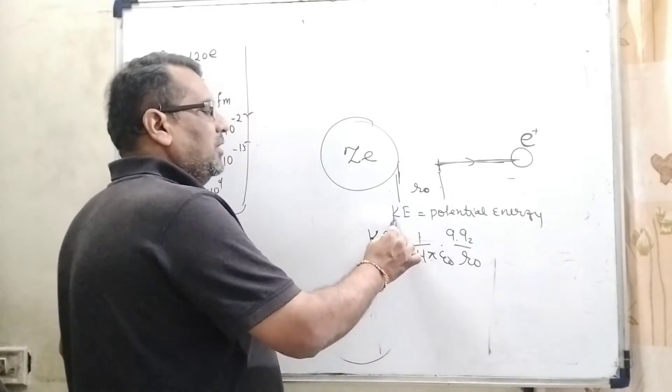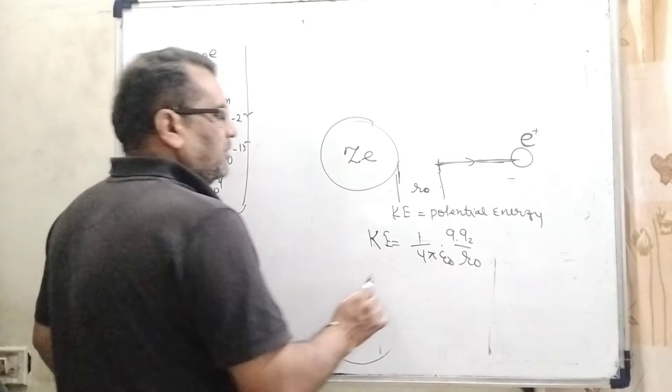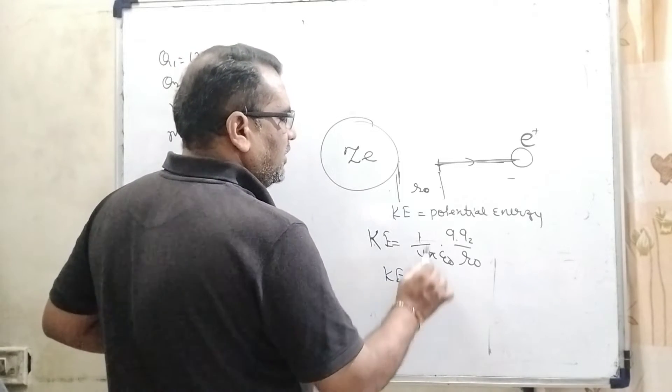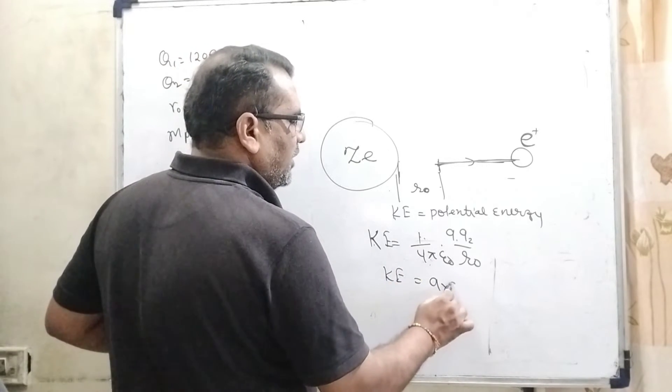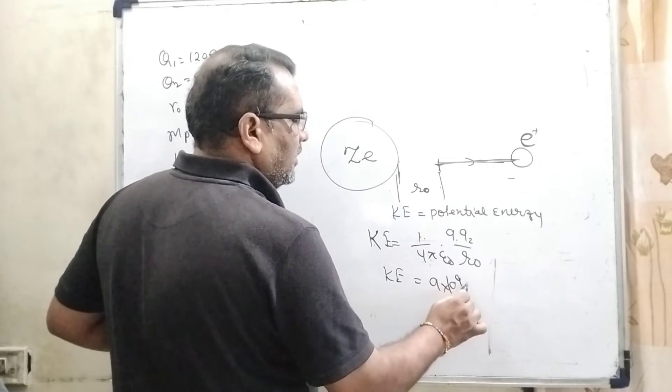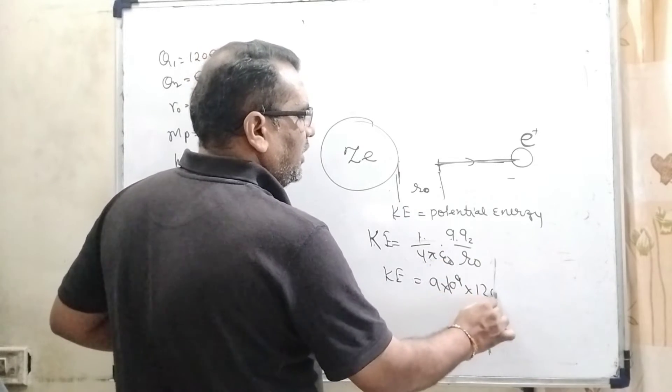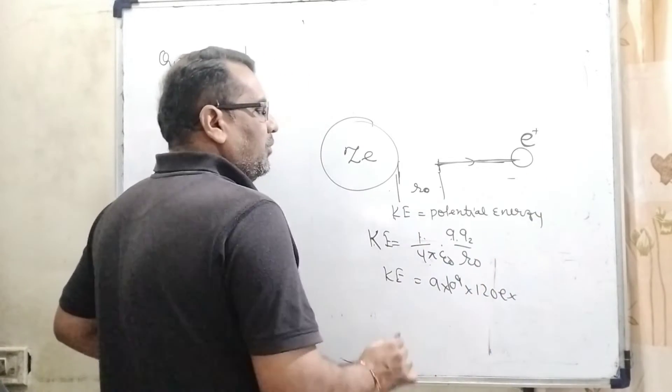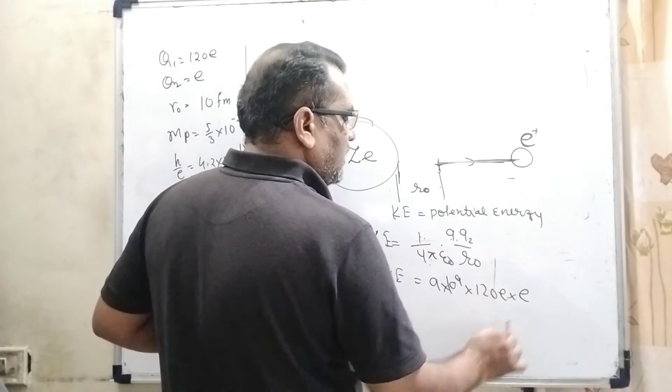So kinetic energy value is 9 × 10^9, q is 120e, and here one proton is fired so charge is e.